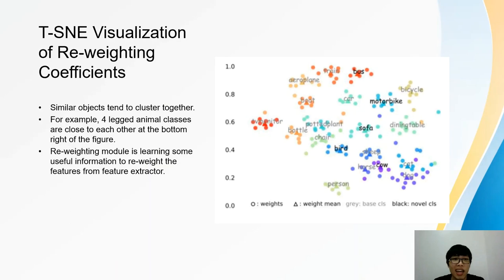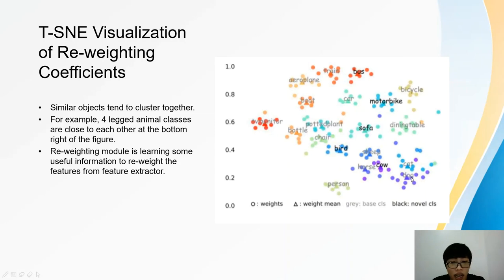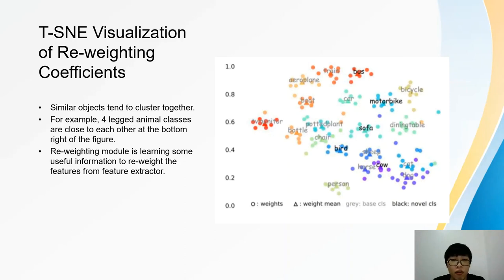These are T-SNE visualizations of the reweighting coefficients. From the visualizations, we can observe that similar classes tend to cluster together. For example, four linked animal classes — sheep, horse, cow, cat, and dog — are close to each other at the bottom right of the diagram. Train, bus, and car are clustered at the middle top of the diagram. Therefore, we can see that the reweighting module is learning some useful information to read the features from the feature extractor.